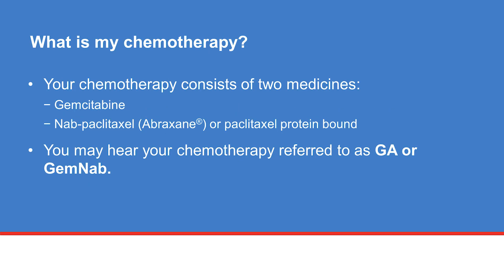Your chemotherapy regimen consists of two medicines. One is called gemcitabine and the other is called nab-paclitaxel, also known as Abraxane or paclitaxel protein bound. You may hear your chemotherapy regimen referred to as GA or GEMNAB.